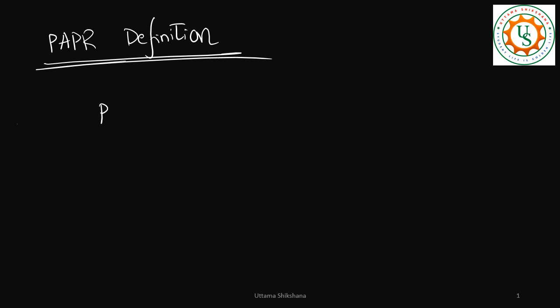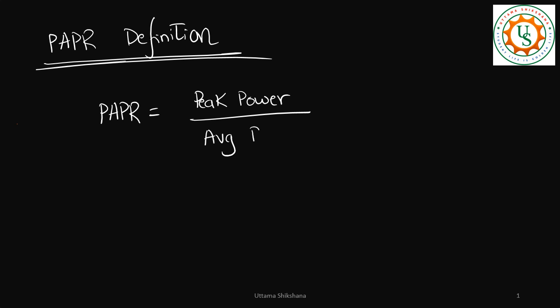PAPR definition: PAPR is peak power to average power ratio. This is the peak power and this is the average power.